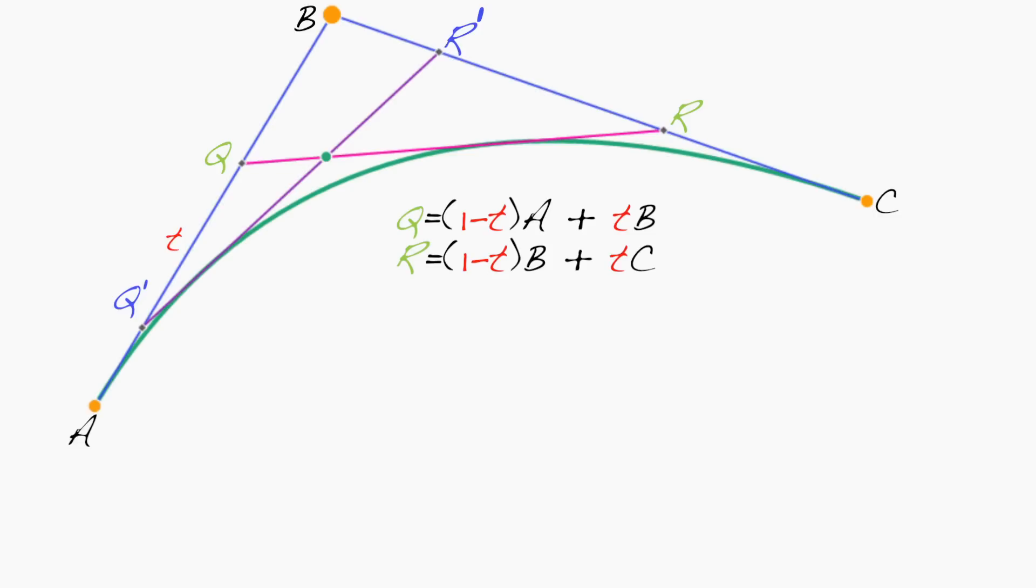Similarly, q prime is s along the way from A to B, so I can write q prime as (1-s)A + sB, and I can write r prime, finally, as (1-s)B + sC.